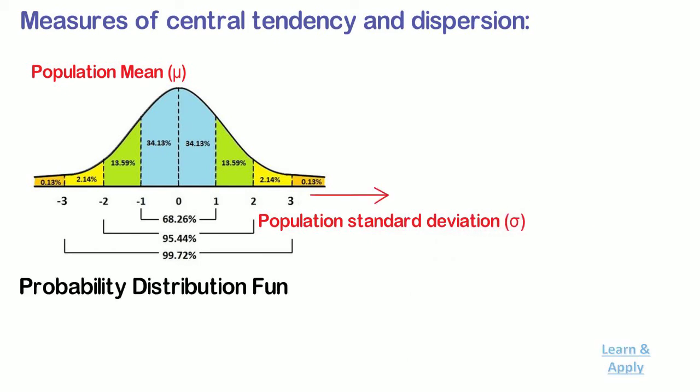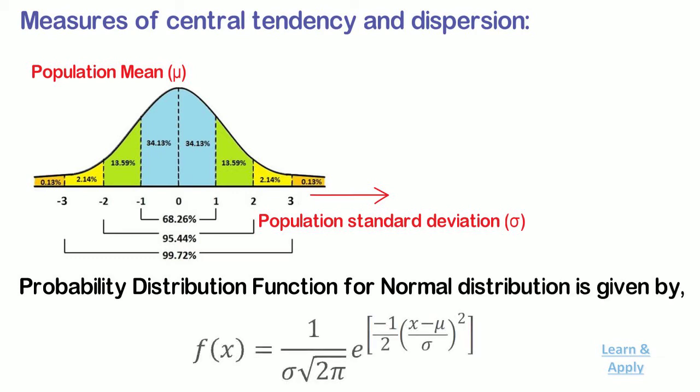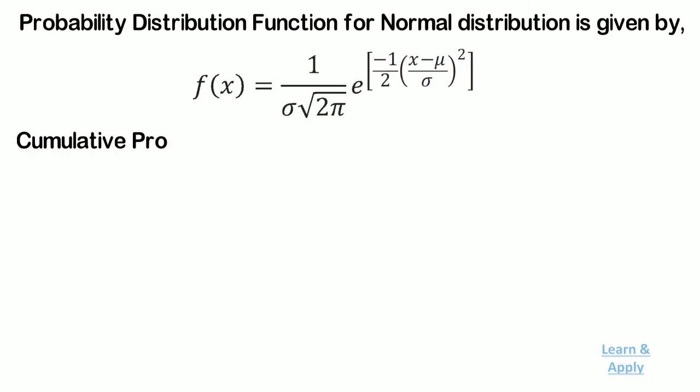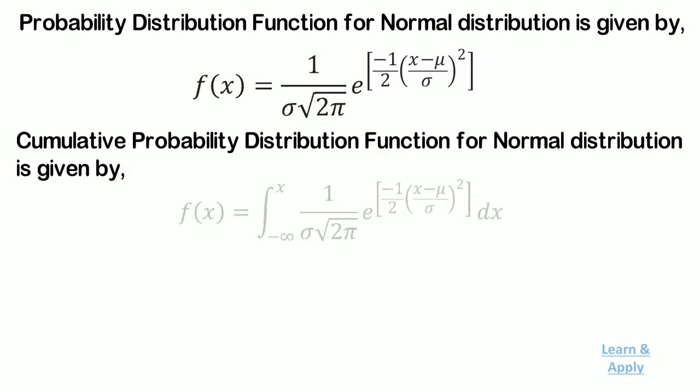Probability distribution function for normal distribution is given by this formula. Here mu is the mean and sigma is the standard deviation.